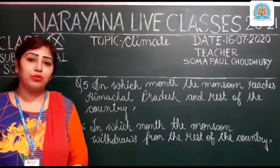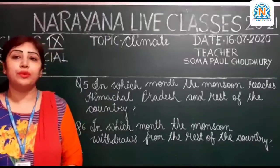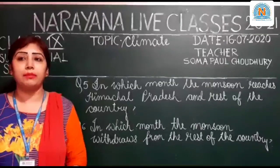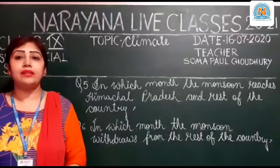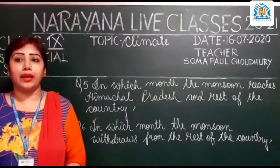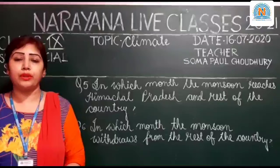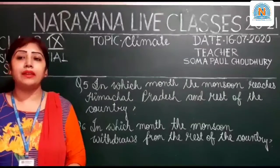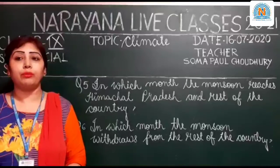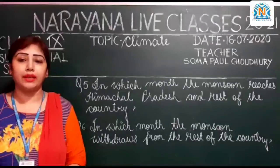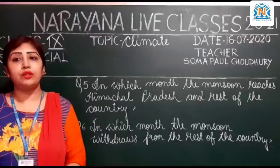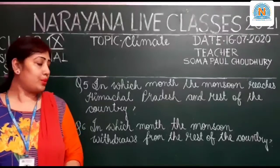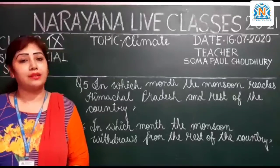Let's move on to the fifth question. In which month does the monsoon reach Himachal Pradesh and the rest of the country? The answer is by mid-July, because the Arabian Sea branch of the monsoon arrives over the central part of the country by mid-July. The Arabian Sea and Bay of Bengal branches of the monsoon merge over the northwestern part of the Ganga plain, thus reaching Himachal Pradesh and the rest of the country by mid-July.